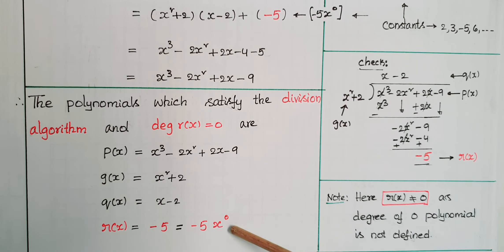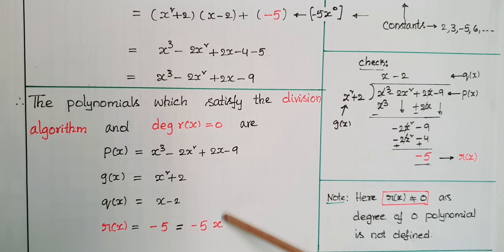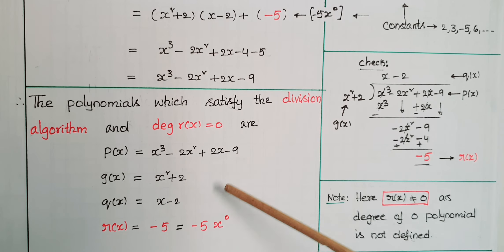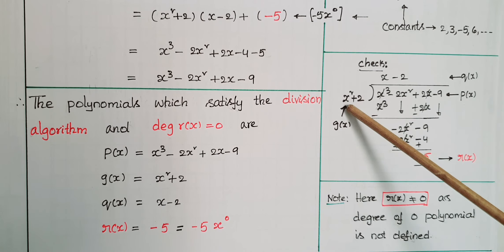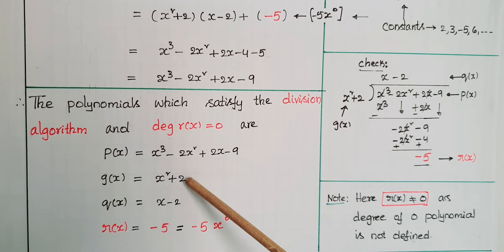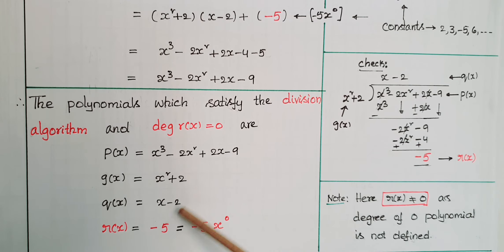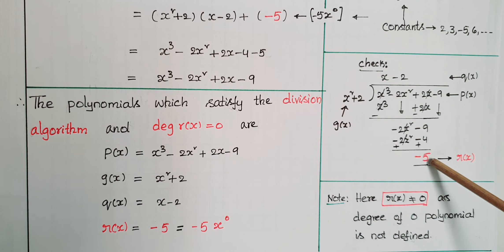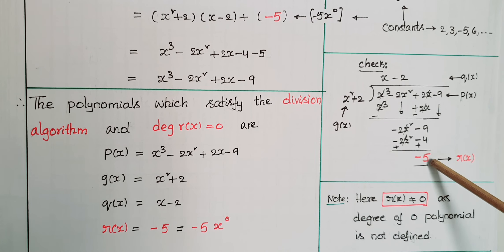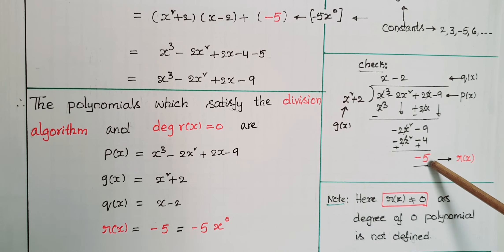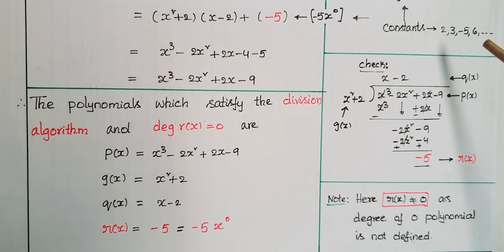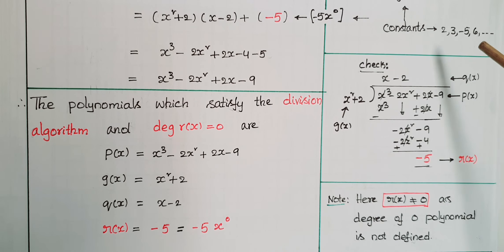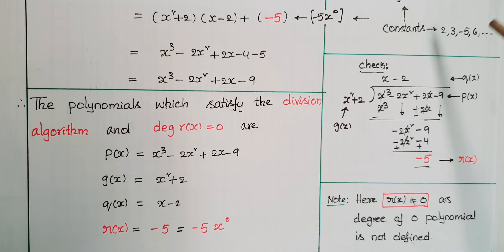So r(x) = −5 = −5·x⁰, and the degree of r(x) is 0. You can verify: dividing p(x) = x³ − 2x² + 2x − 9 by g(x) = x² + 2 gives quotient x − 2 and remainder −5. Note that r(x) is not equal to 0, because the degree of the zero polynomial is not defined.